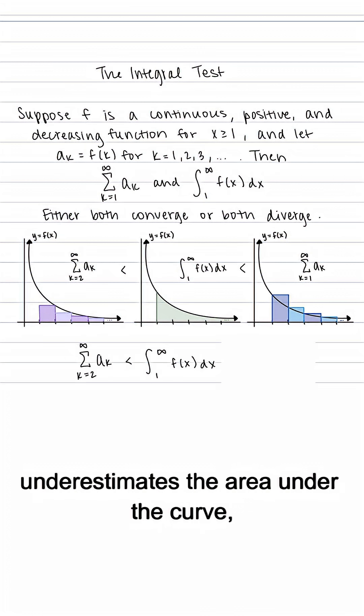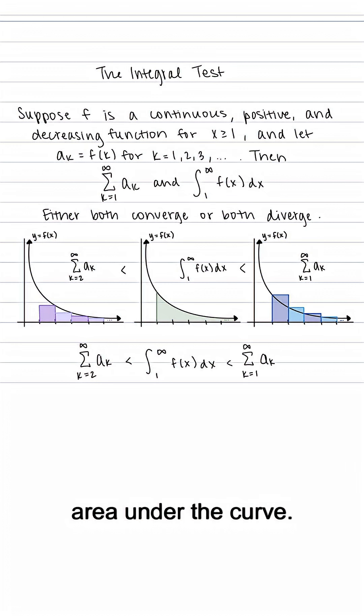The right Riemann sums underestimate the area under the curve and the left Riemann sums overestimate the area under the curve.